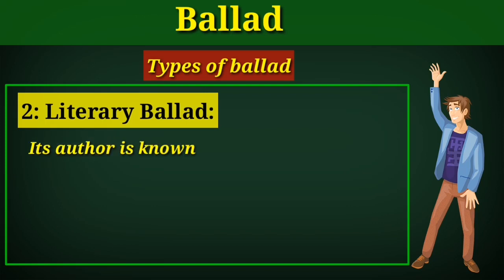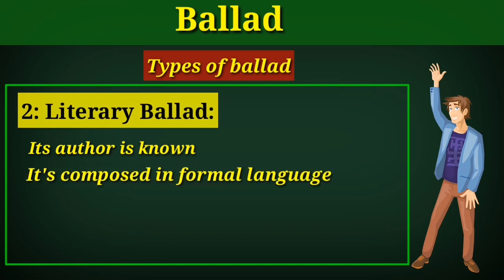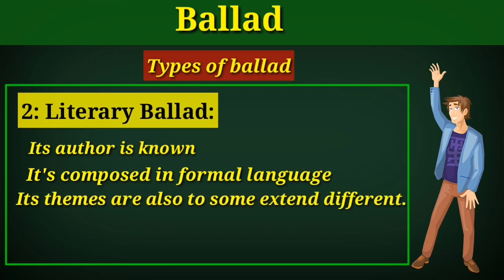Examples of folk ballads are 'Barbara Ellen' and 'The House of the Carpenter.' The next type is literary ballad — it is a type of ballad written by a known author and based on traditional ballad form. The key difference is that a literary ballad has a known author while a folk ballad does not. Literary ballads are also composed in more formal language compared to folk ballads, and their themes include social and political issues.